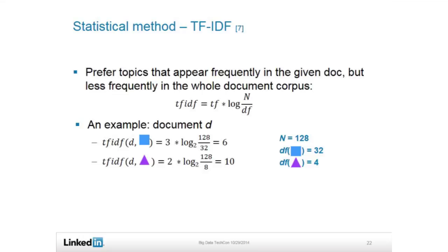Let's say we have 128 such documents — that's the big N. For the current document, we have three blue squares and two purple triangles. The formula gives: three times log base 2 of (128 over 32), leaving to six. But for the purple triangle, it turns out to be 10. So in this case, the formula actually finds the purple triangle is more important than the blue square. This is the classic statistical method.